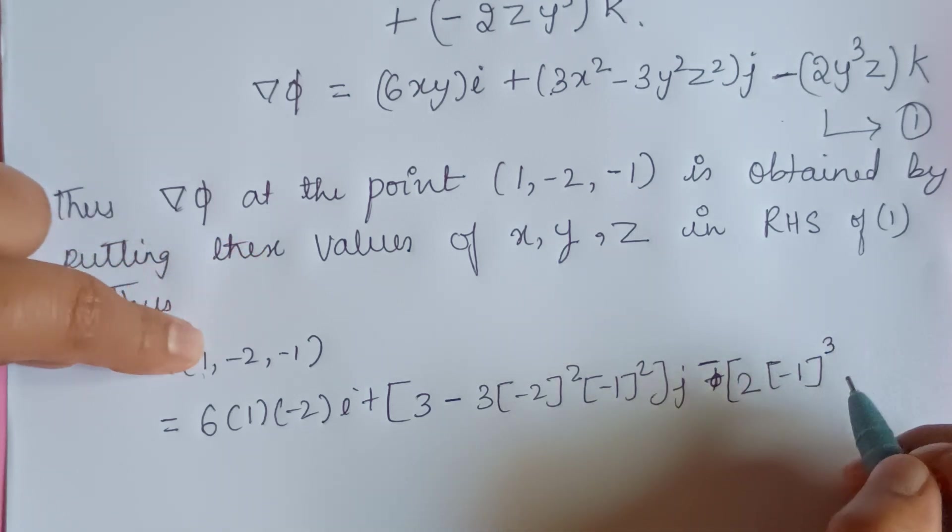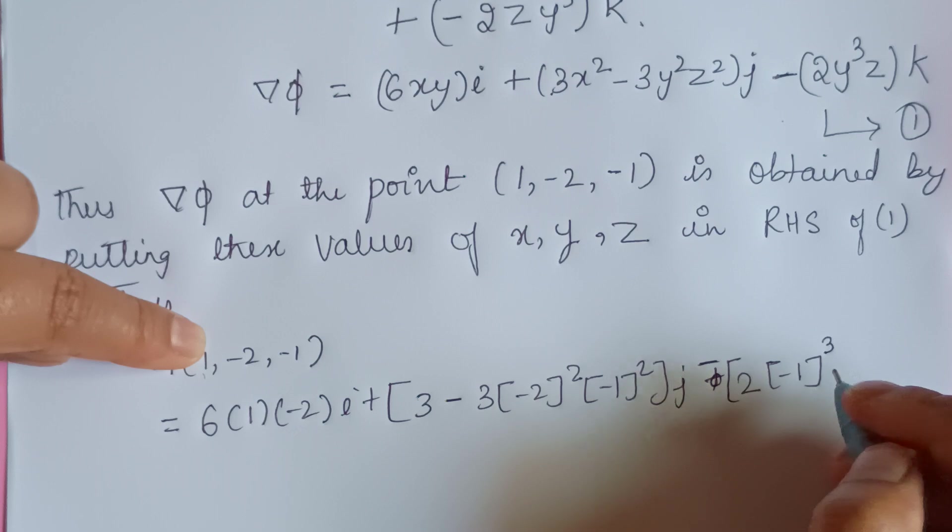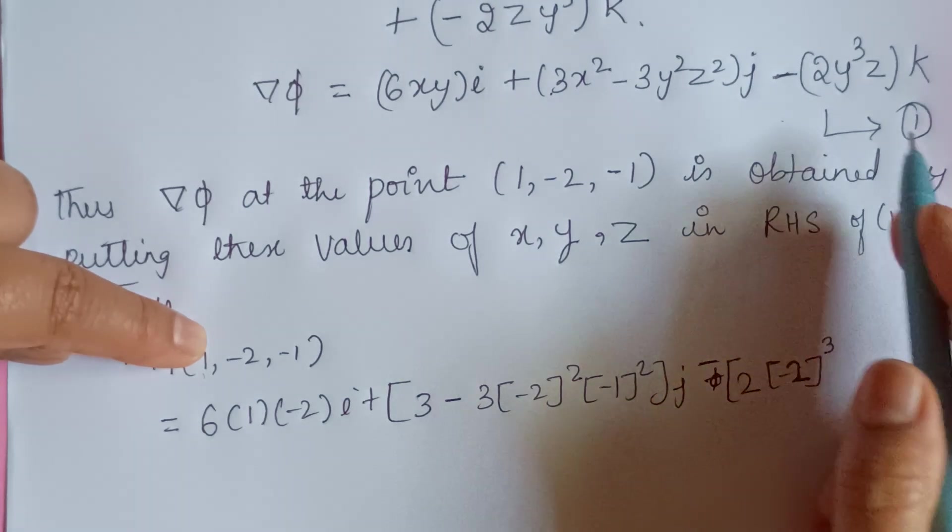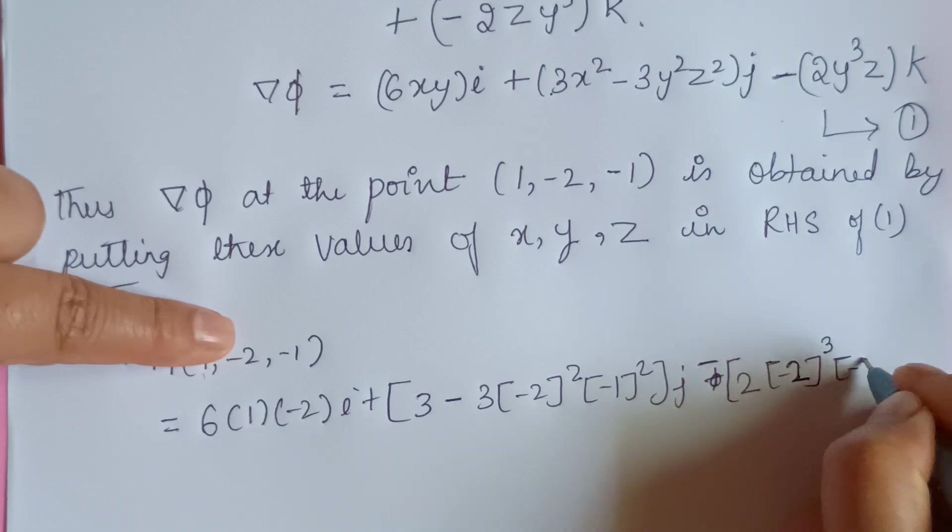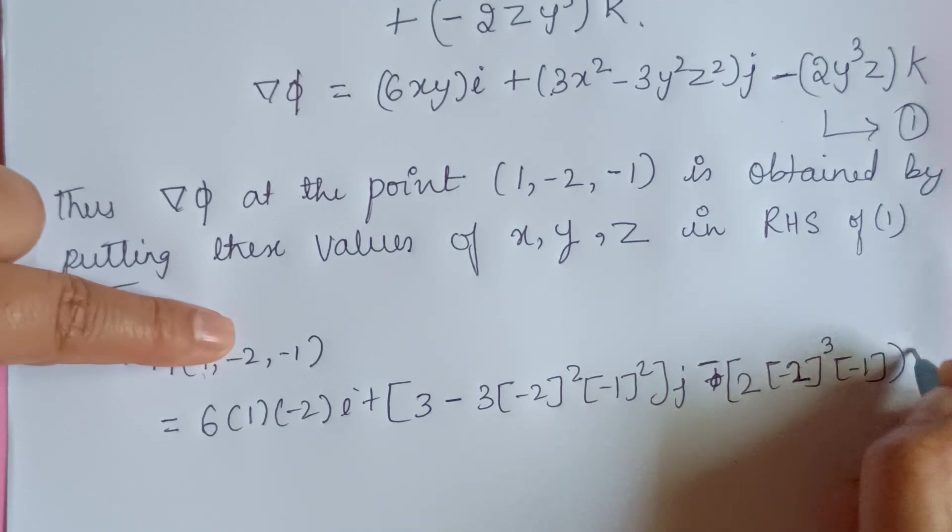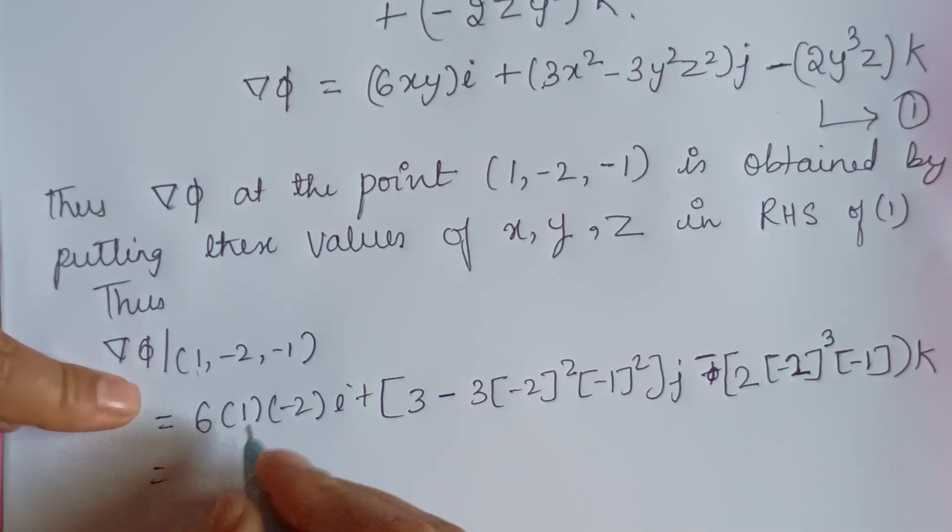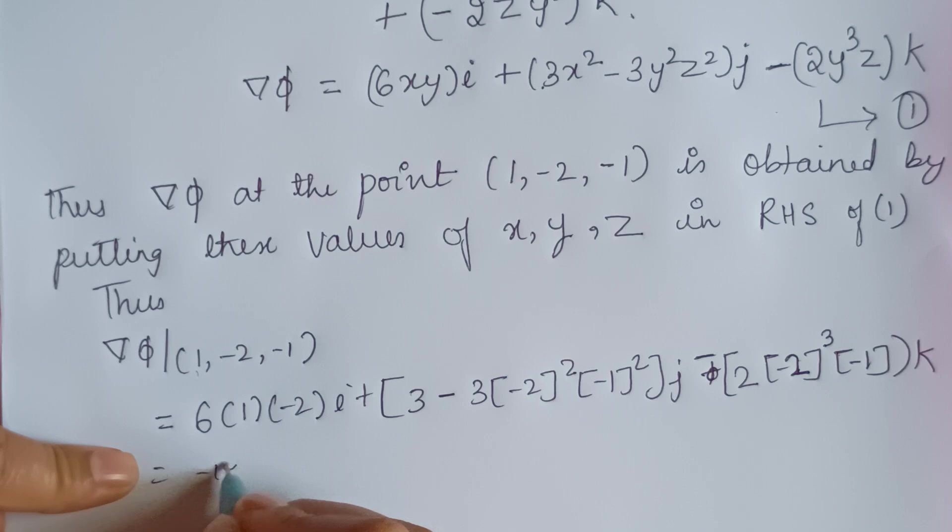Y is minus 2, so minus 2 cubed into z which is minus 1 into k.